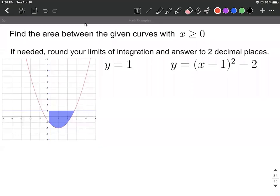In this example, our goal is to find the area between two curves with only x values greater than or equal to zero. We're going to find the limits of integration and round those and our answer both to two decimal places.